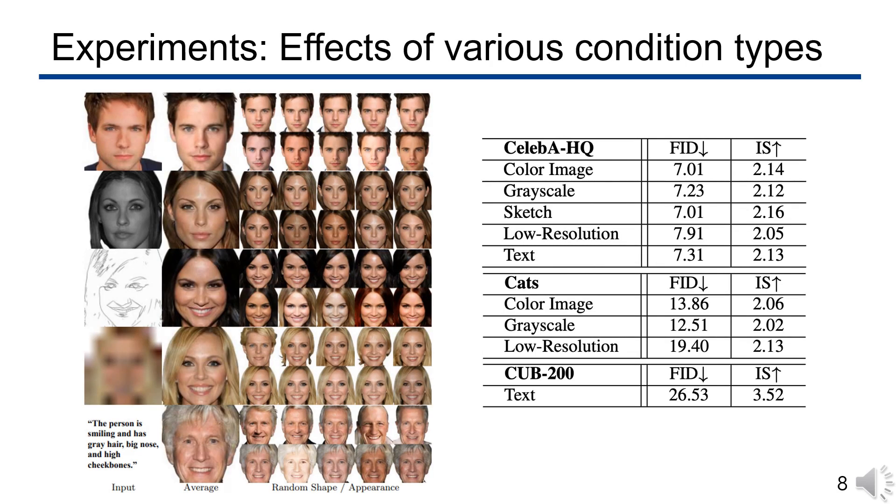This is the qualitative results with various condition input types. For each condition type, the average output image generated with zero-valued noise codes is visualized in the second column. And from the next column, we visualize output images generated from five different shape noise codes in the first row, and five different appearance noise codes in the second row. As you can see in the table, our method consistently maintains high visual quality across all types of input conditions.